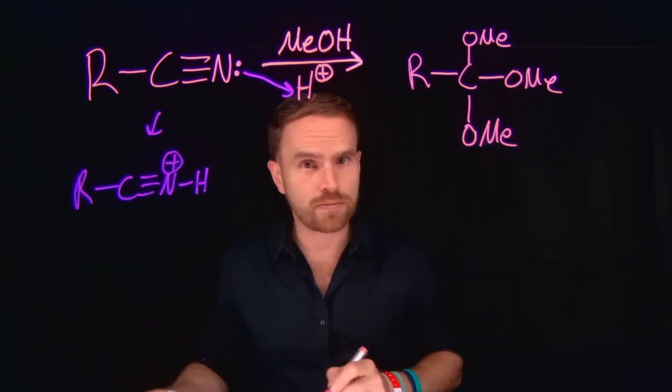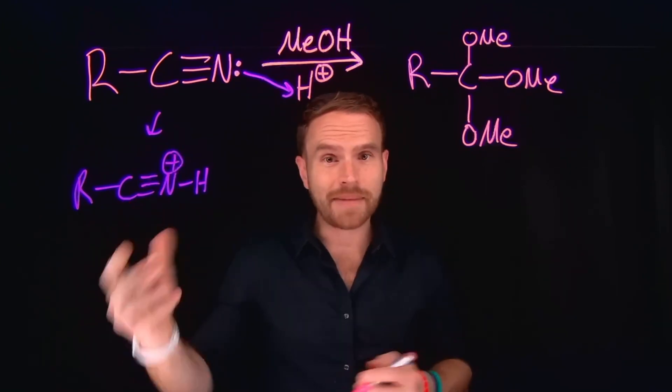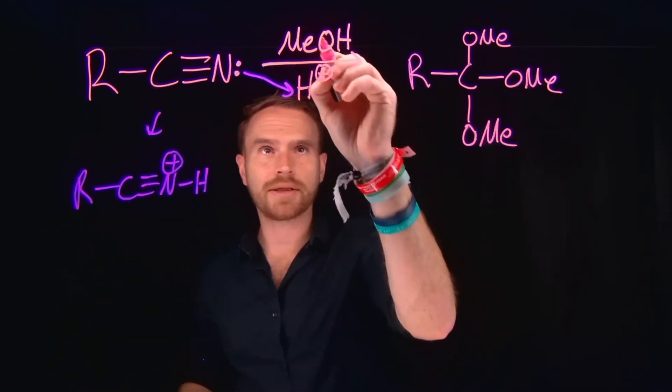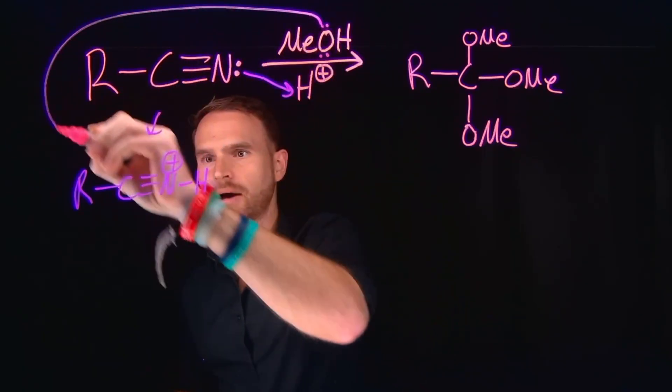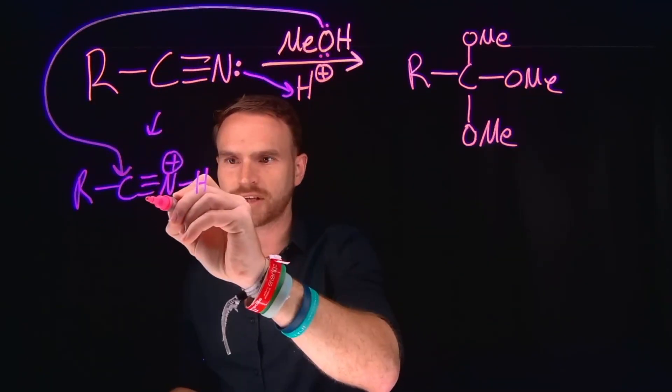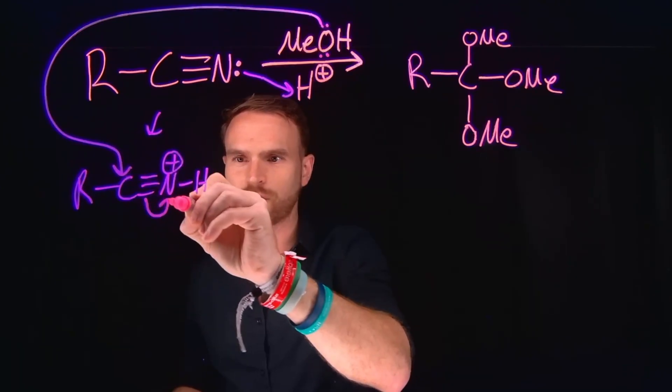I often refer to this as turbocharging the electrophilic carbon. And it makes it so electrophilic that even something like an alcohol, like in our case methanol, can act as a nucleophile and come and attack that carbon, which is going to serve to kick over some of these pi electrons over to the nitrogen.